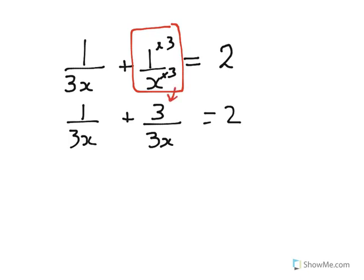You now have the same denominator on the bottom, so these two terms can now be added together. You're adding in 3x's, so your denominator stays the same, and on the top you get 1 plus 3 equals 4. So you now know that 4 over 3x equals 2.